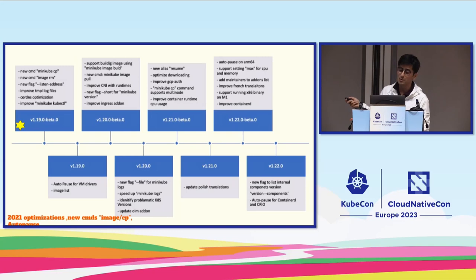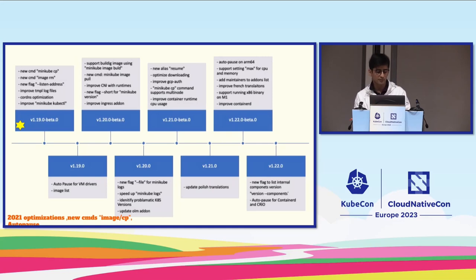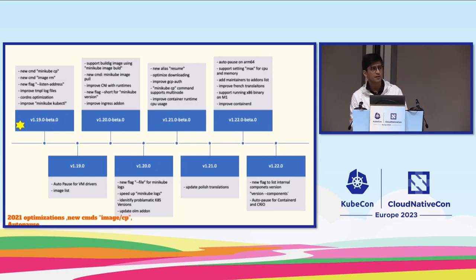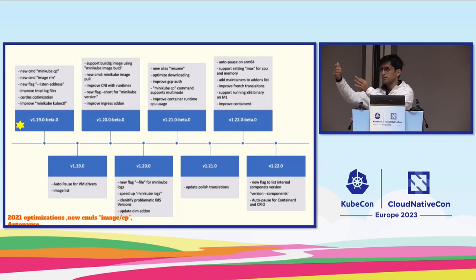Minikube 1.19 introduced `minikube cp` — the copy command — which lets you copy a file into Minikube very easily, more intuitive than `minikube mount`. Another interesting thing in 1.19 was the `minikube image` command, which helps you build images without Docker using BuildKit underneath. You just say `minikube image build -t your-tag path/to/Dockerfile` — same syntax as Docker build. Anders worked a lot on that.